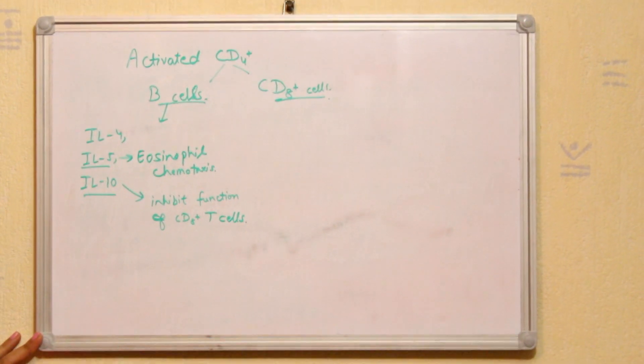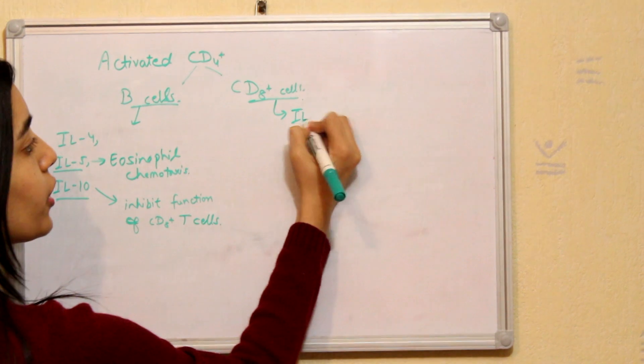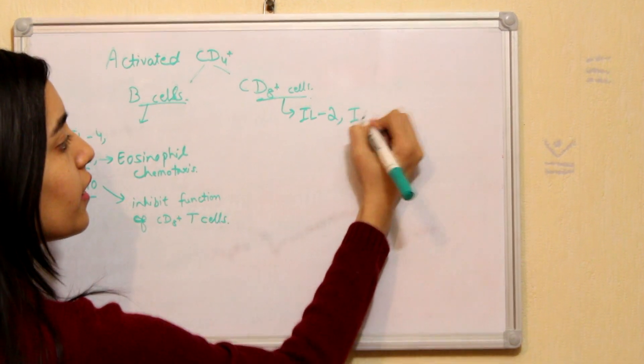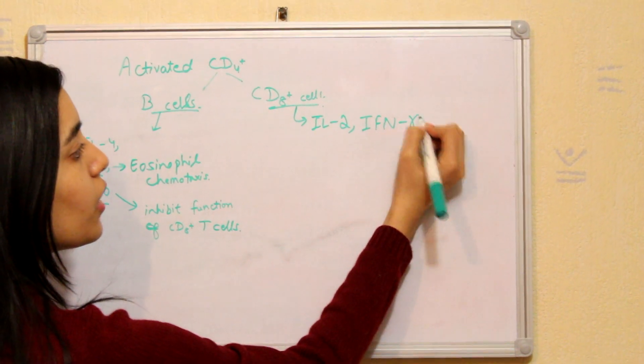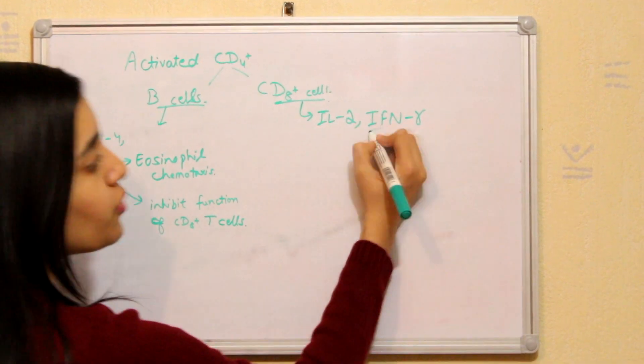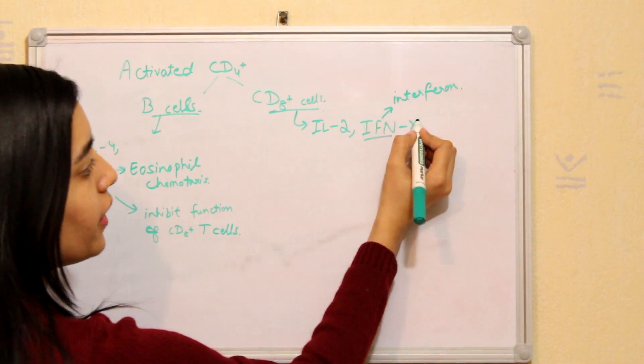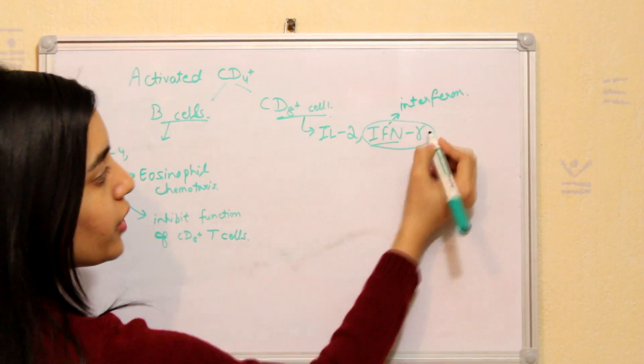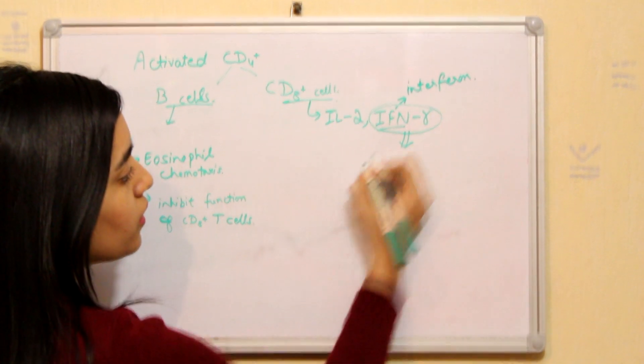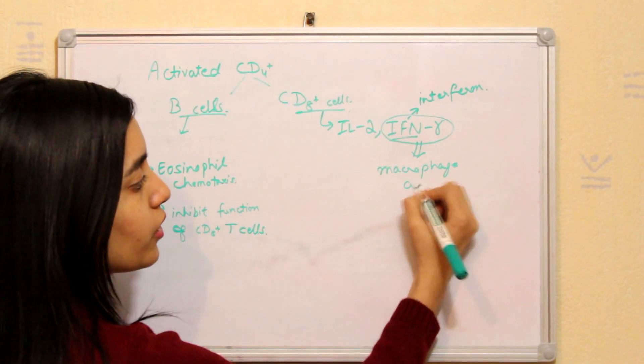Now what is the function of CD8 plus T cells? It releases interleukin 2 and IFN gamma. IFN stands for interferon, and interferon gamma, specifically gamma, this is macrophage activator.